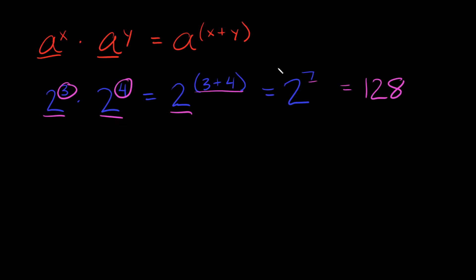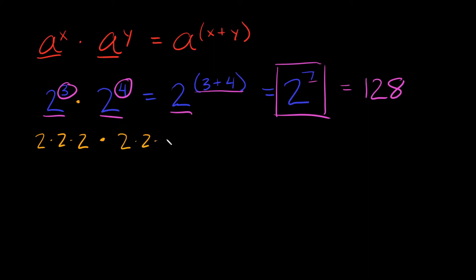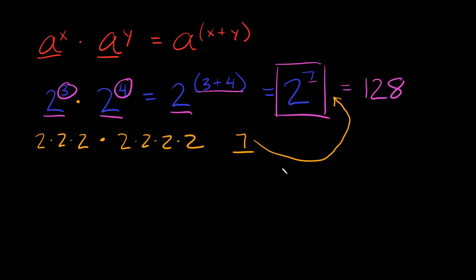So 2 to the 7th is our main answer. We can check it: 2 to the 3rd is 2 times 2 times 2, and we're multiplying that by 2 to the 4th, which is 2 times 2 times 2 times 2. So we've got three 2s and four 2s — seven 2s total, which matches our exponent of 7.